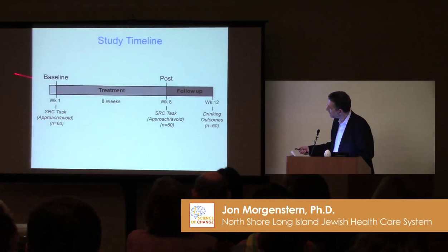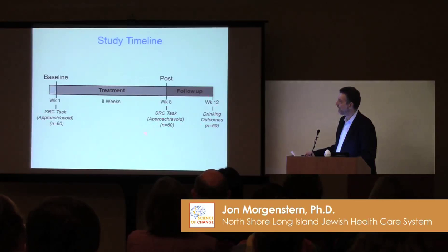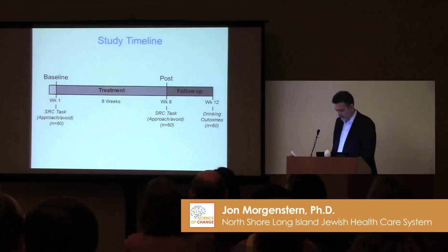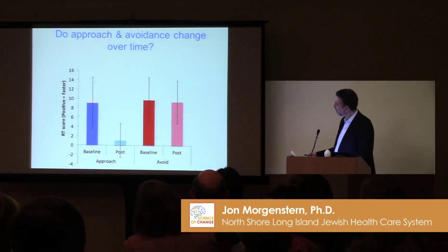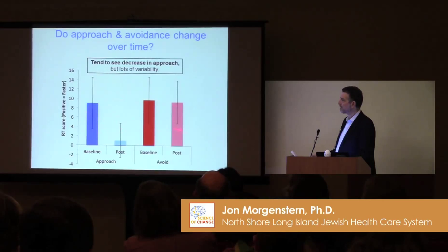This is just the study timeline. We had a baseline where people got this task, then an eight-week treatment period, then the task post-treatment, and then a four-week follow-up. This is a small subsample — the first 60 subjects from a larger ongoing study. Treatment conditions were controlled for and not particularly relevant here. Do approach and avoidance change over time? The answer is yes, but approach from pre- to end-of-treatment is reduced — it's not a significant difference, mostly because there's a lot of variability in this measure. In a larger sample it probably would be.